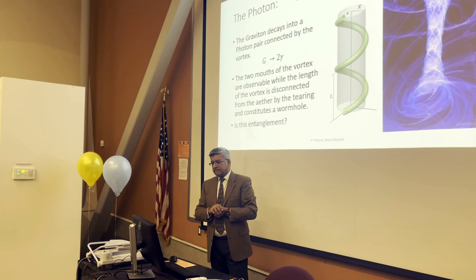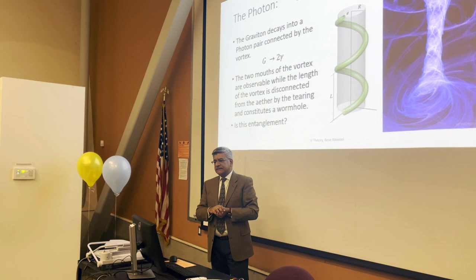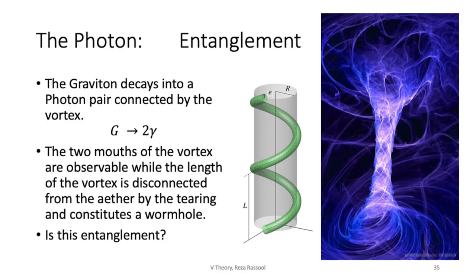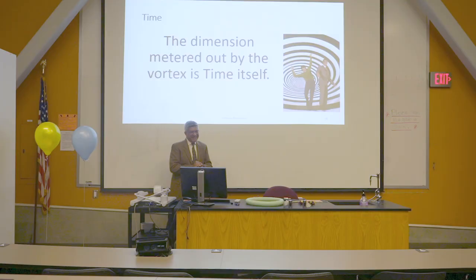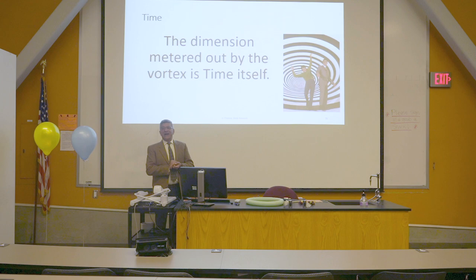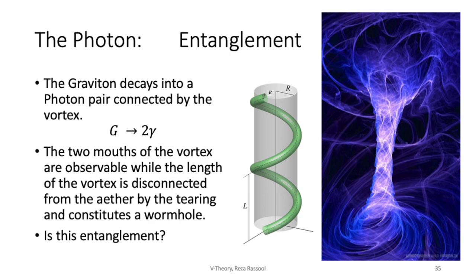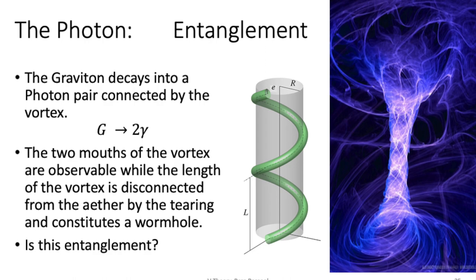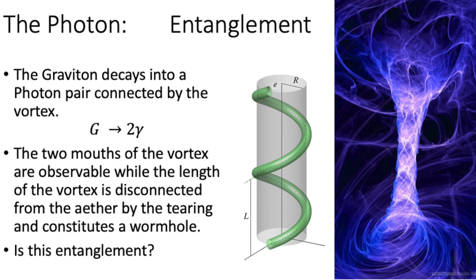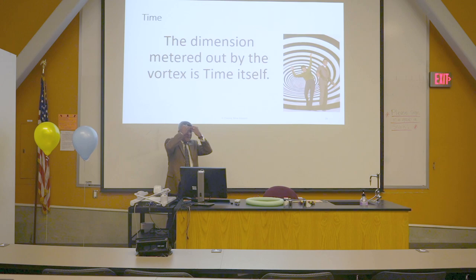Could it be the basis of teleportation? Well it could be if the dimension exposed here in the wormhole is time itself. The dimension that is metered out by the vortex according to v-theory is time itself. If you were to fly into the mouth of the vortex you'd actually fall backwards in time to the point where the graviton had created those two holes and then continue falling. You're now going to fall in time and you'd emerge out of the other hole at the same instant that you went in the first hole. Mind blown, okay.